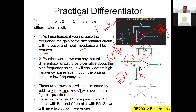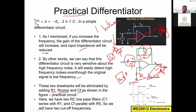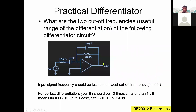The lower cutoff frequency is: f_L = 1 / (2π * R1 * C1). The upper (higher) cutoff frequency is: f_H = 1 / (2π * R_f * C_f). These correspond to the two low-pass filters in the practical differentiator circuit. We will verify these with a numerical example.